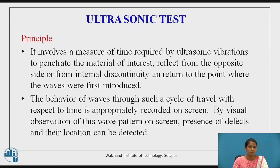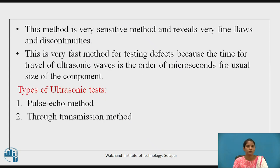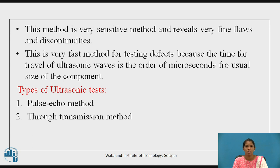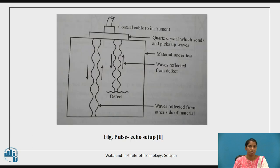By visual observation of the wave pattern on the screen, the presence and location of defects can be detected. This method is very sensitive and very fine defects and discontinuities can be found. It is also a very fast method for testing defects because the travel time of ultrasonic waves is in the order of microseconds. There are two types of ultrasonic methods: the pulse echo method and the transmission method.